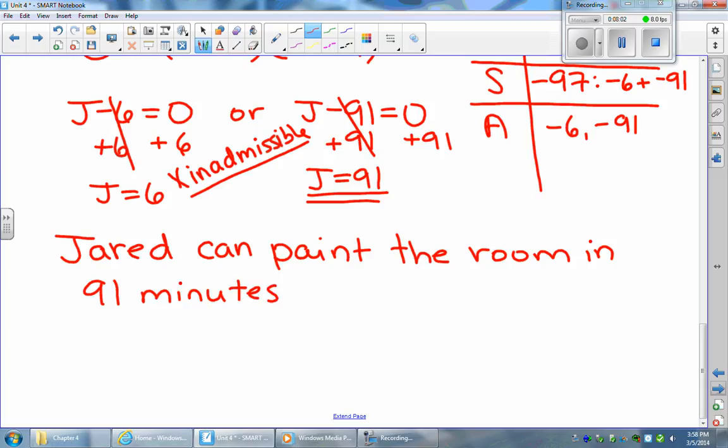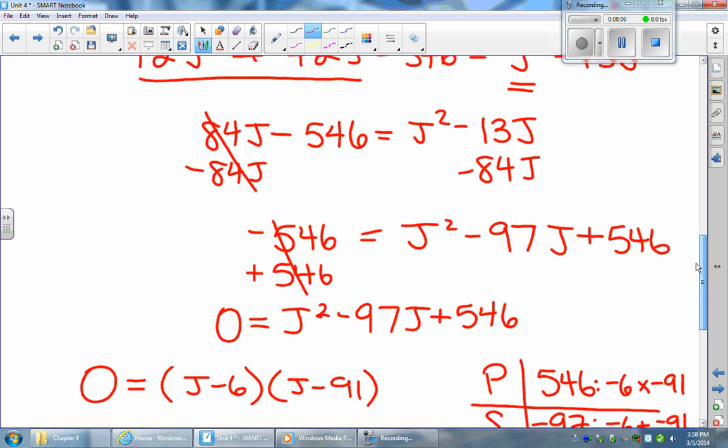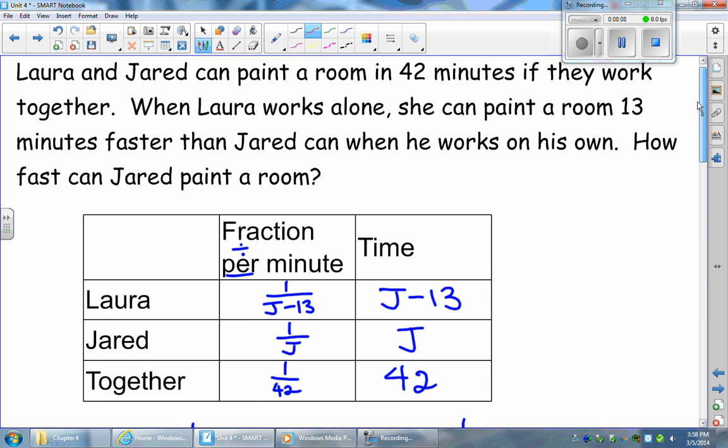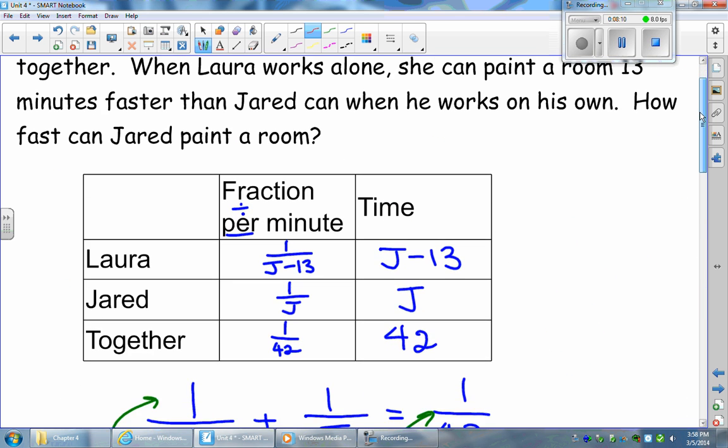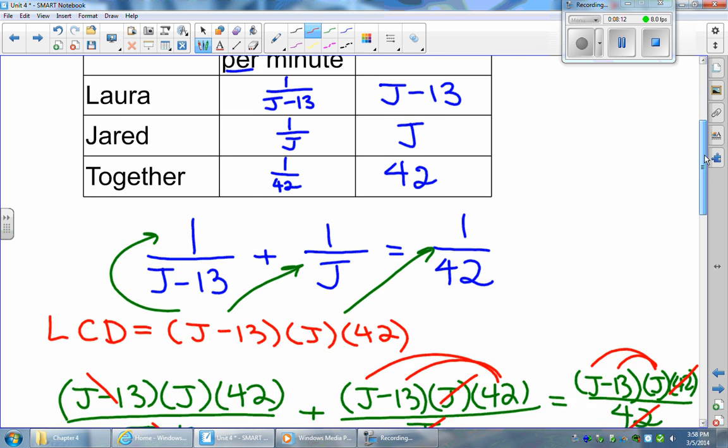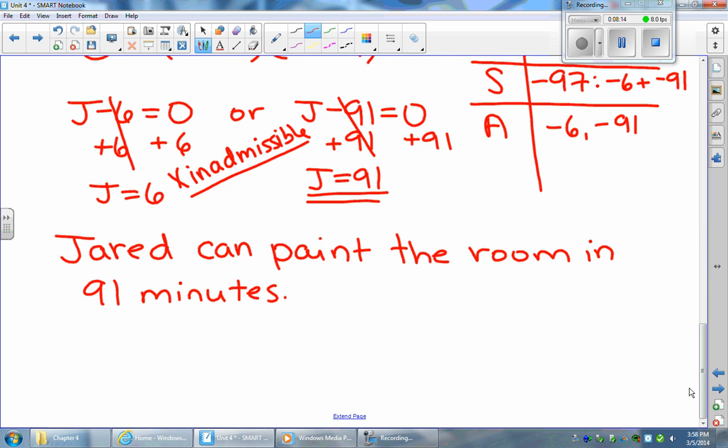And don't forget to always include your non-permissible values. Because we had j in our denominator and j minus 13 in our denominator, we know that our non-permissible values would be j cannot equal 0 and j cannot equal 13.